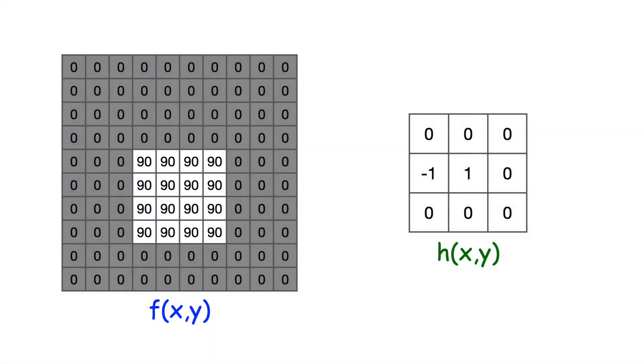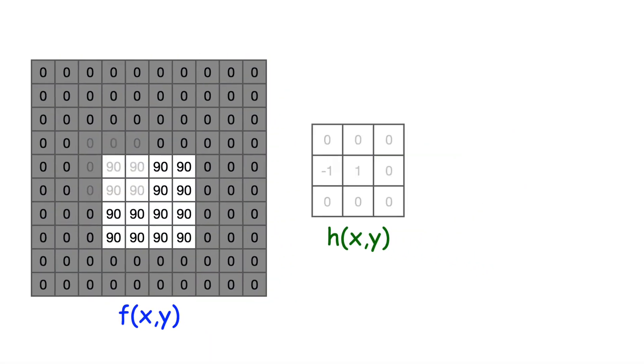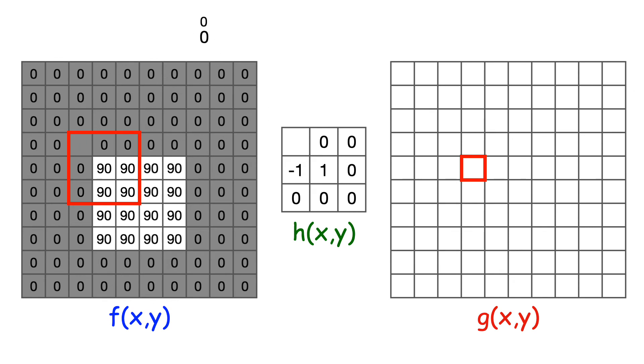What does this kernel do? Any guesses? Let's apply it and find out. The top left kernel entry multiplies the top left pixel in the window. The result is 0. Let's add in the next pixel with its weight, also 0, and so on.